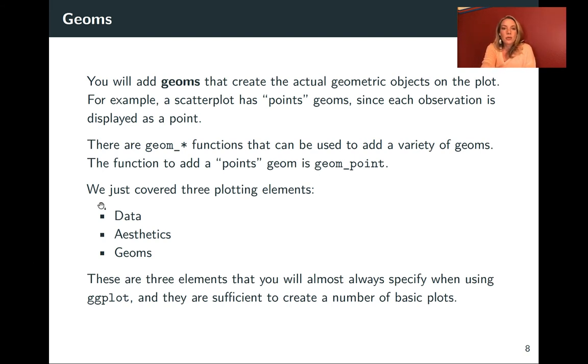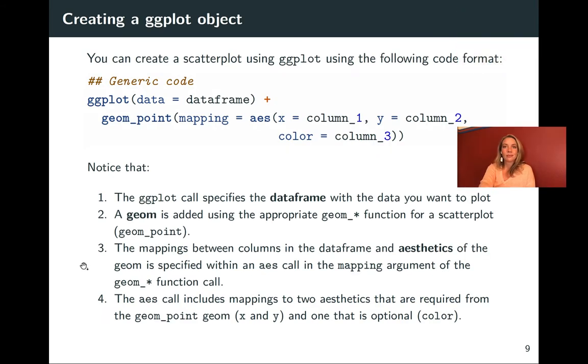So we just covered these three elements, the data, the aesthetics and the geoms. And these will be the three elements you'll almost always specify when you're using ggplot to create a visualization. By combining them in different ways, you'll have a lot of flexibility in creating a lot of different graphs.